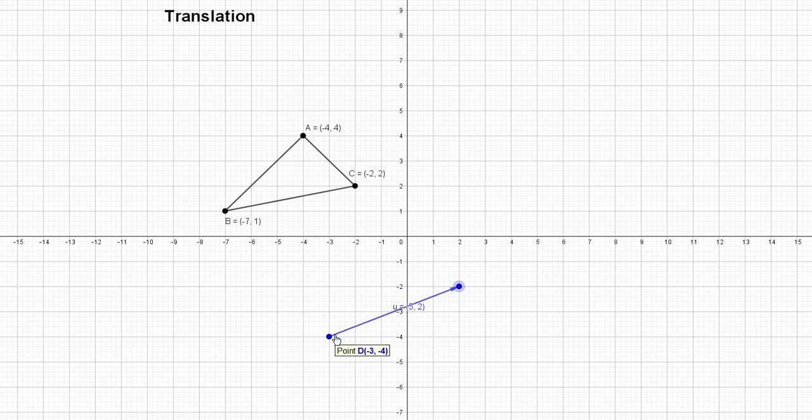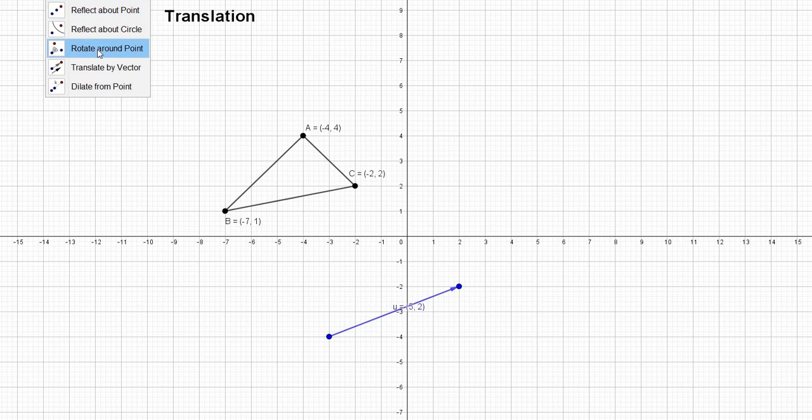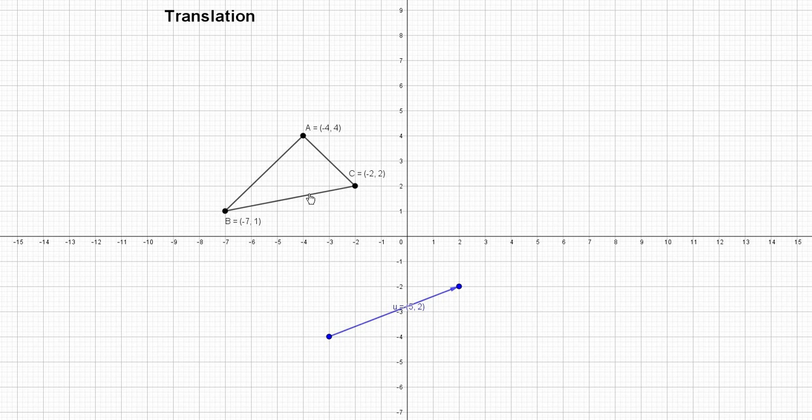Now we are going to displace this triangle ABC with respect to this vector. For that one, what we need to do is, we need to translate by a vector, this triangle, with respect to this vector.